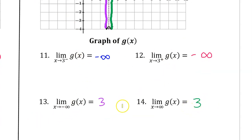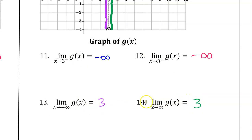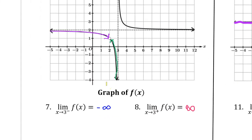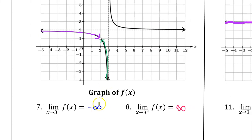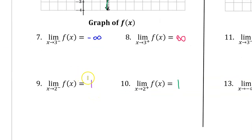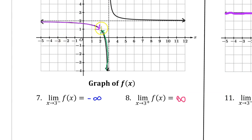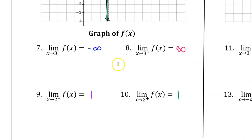Notice that limits are always y-values. The limit of 3 was a y-value of 3. Negative infinity means the y-values are approaching negative infinity. And the limit at a hole was the y-value of the hole. Keep that in mind — limits are always y-values.